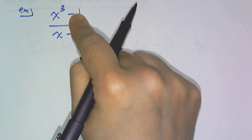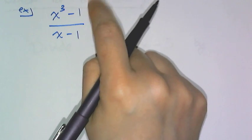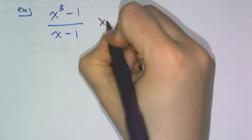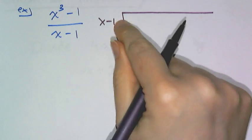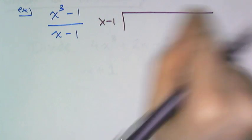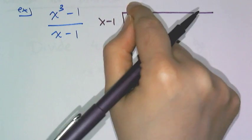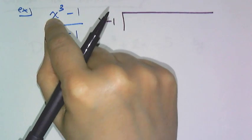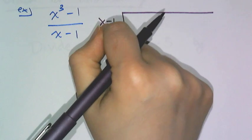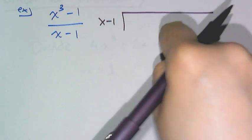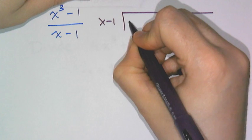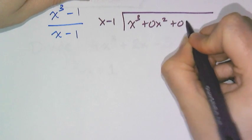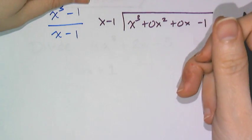This next one is special because I have to do something extra before dividing. I have x − 1 as my divisor. Notice I drew a really long bar here because I have to add the powers that are missing — like missing place values. I have an x³ place value, but I don't have the x² or x place values, so I have to add them in. I rewrite the dividend as x³ + 0x² + 0x − 1.